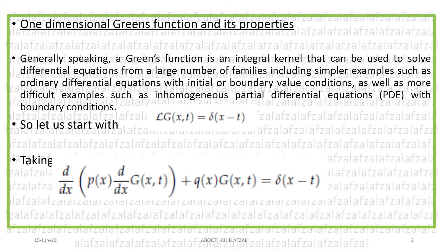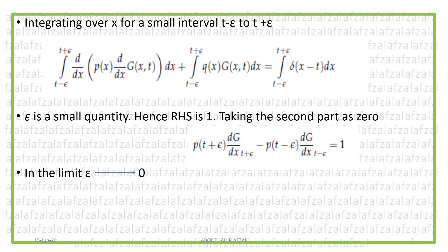Consider the Sturm-Liouville operator given by d/dx [p(x) dG/dx] + q(x)G(x) = δ(x − t). We expand this and integrate both sides over a small interval from t − ε to t + ε. That gives the integral from t − ε to t + ε of d/dx [p(x) dG/dx] plus the integral of q(x)G(x) equal to the integral of δ, which equals 1 since ε is a small quantity.